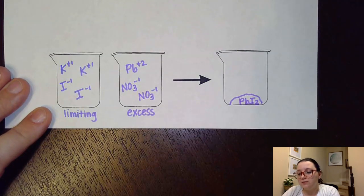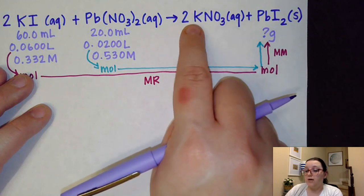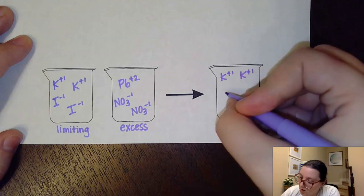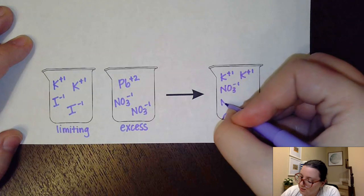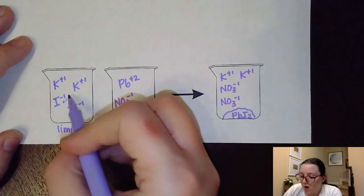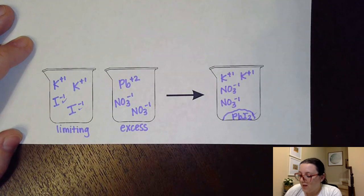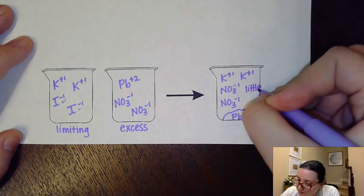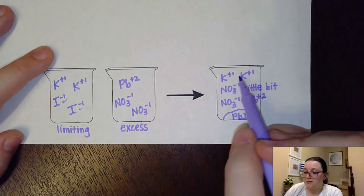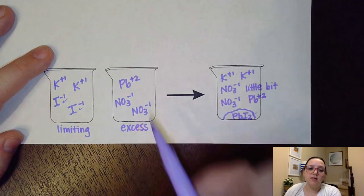Now let's think about what's in the solution. KNO₃ being aqueous splits up into ions, so I end up with two potassiums and two nitrates — I'll draw those in. But there's also something else: back in the reactants, I used up all of the iodide ions to make PbI₂. However, since lead nitrate was the excess compound, there's going to be a little bit of Pb²⁺ ions remaining in solution — not as much as the K⁺ and nitrates, but some. Not all of it went to making the solid; there will be some in excess.